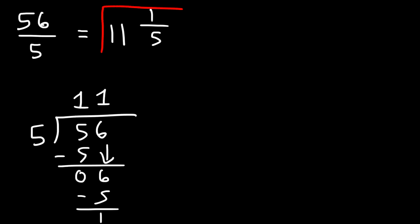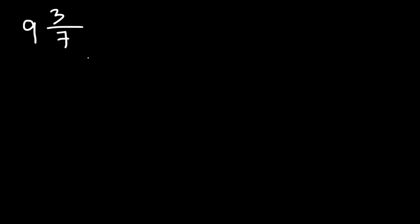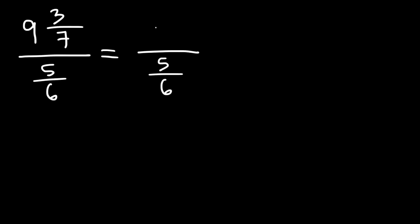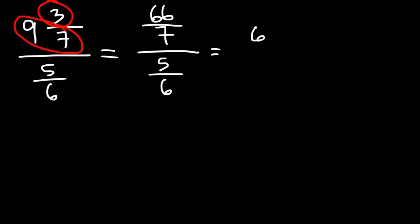That's the answer to the first problem. Now let's look at another example: 9 and 3 over 7 divided by 5 over 6. Go ahead and try that problem. Let's convert the mixed number into an improper fraction — the 7 stays the same, and then 9 times 7 is 63 plus 3, so that's 66. This gives us 66 over 7 divided by 5 over 6.